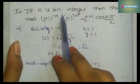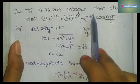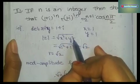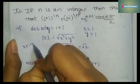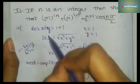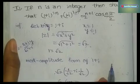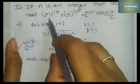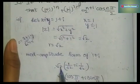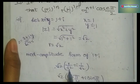The first problem: if n is an integer, show that (1+i)^2n + (1−i)^2n = 2^(n+1) cos(nπ/2). First, find mod z: if x + iy is the expression then mod z = √(x² + y²). Here x = 1, y = 1, so mod z = √2. Now find the modulus-amplitude form of 1+i and 1−i. For 1+i, we got r = √2, so multiply and divide by √2.